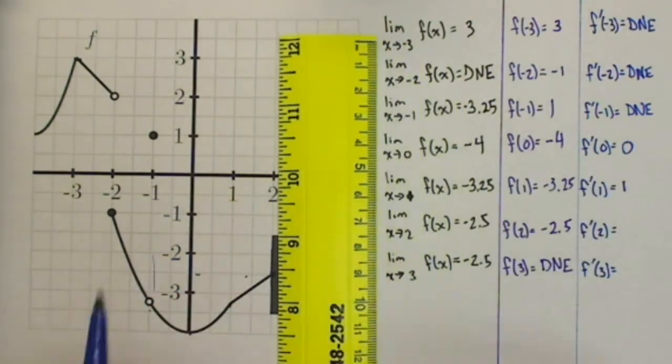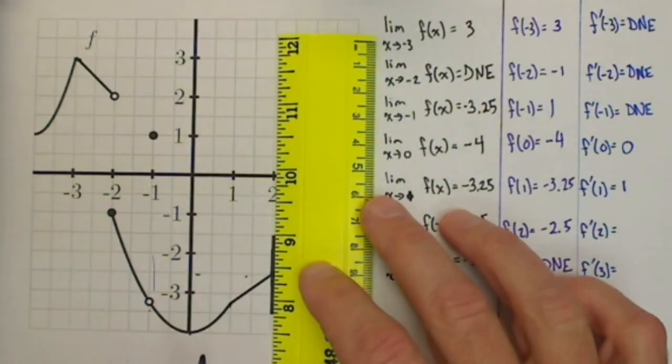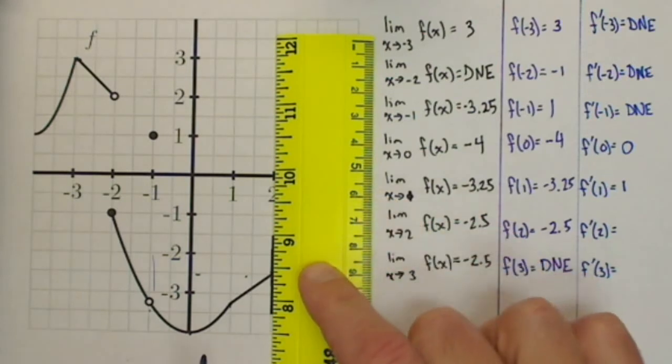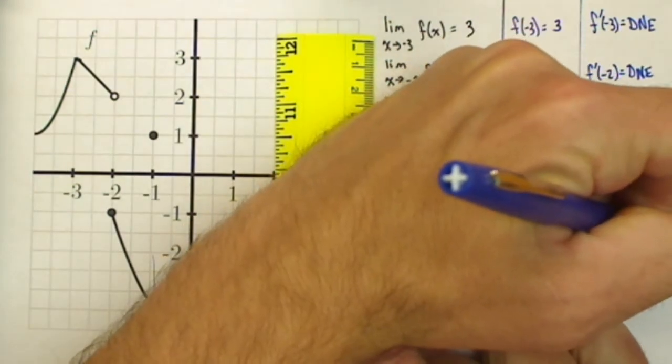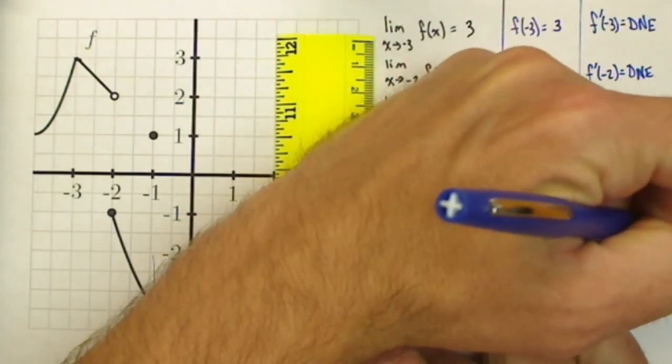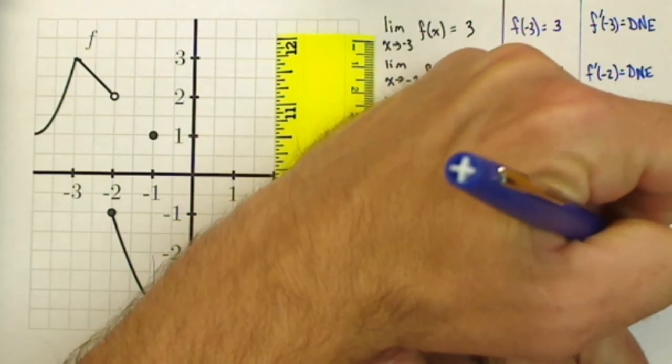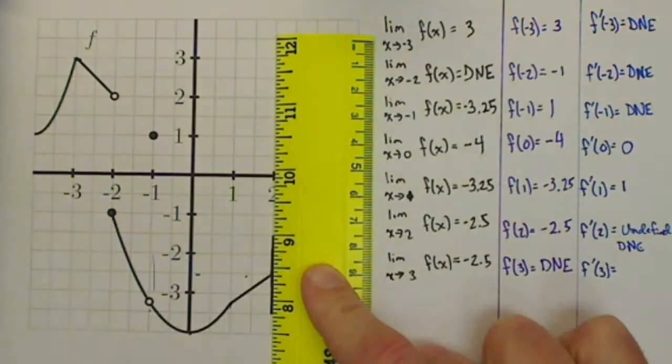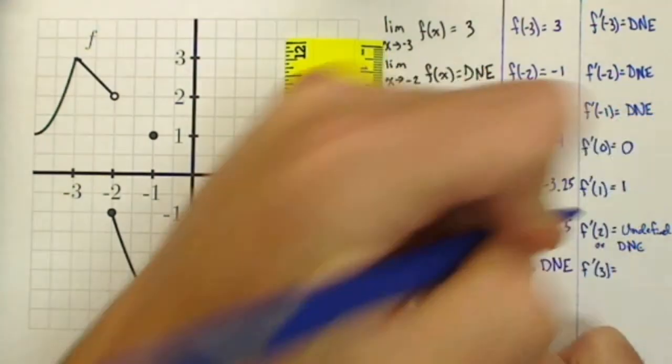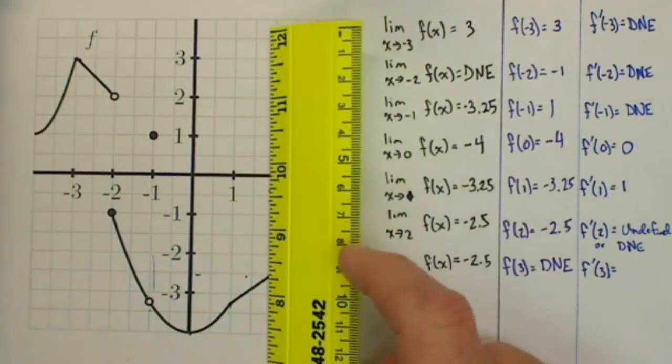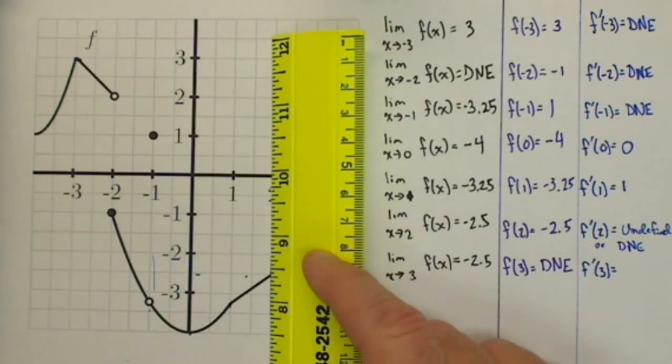Now as we get into f prime of 2, look at what happens. That line is pretty much vertical. When we have a vertical line, remember that the slope is undefined, or we could say just like we did before, the slope, the derivative does not exist at 2. So vertical tangent means the derivative does not exist.